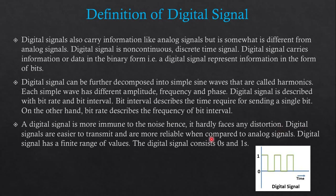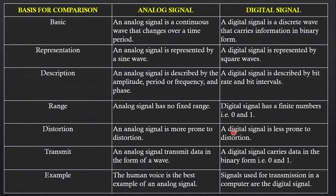Digital Signals are easier to transmit and more reliable when compared to Analog Signals. A Digital Signal has a finite range of values — it consists of only 0s and 1s. This concludes the definition of Analog Signal and Digital Signal.